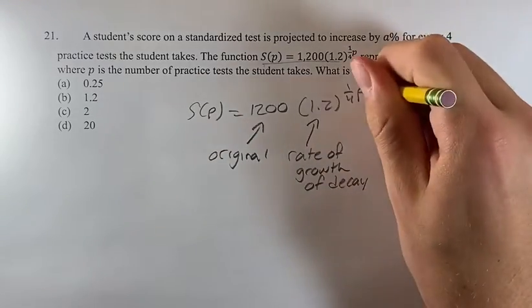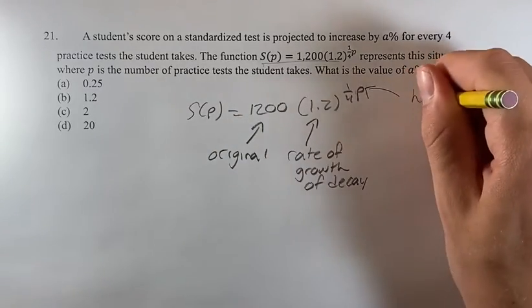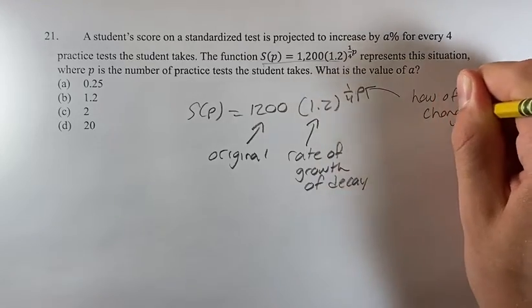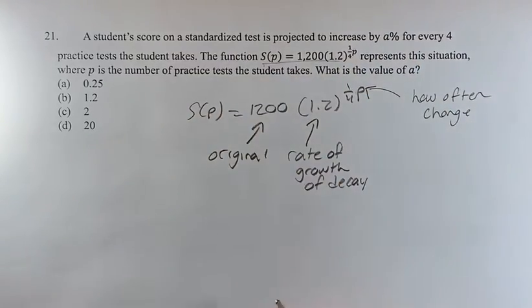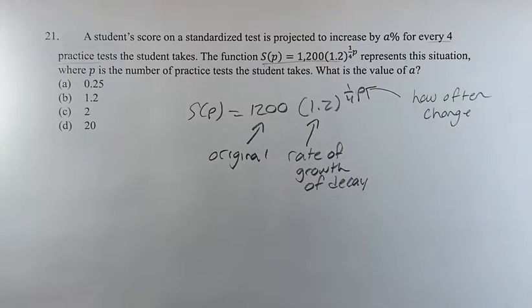And then every year, day, whatever this turns out to be, that's how often we have a change. Notice 1 fourth corrects for the fact that we're increasing every four practice tests, not every practice test.